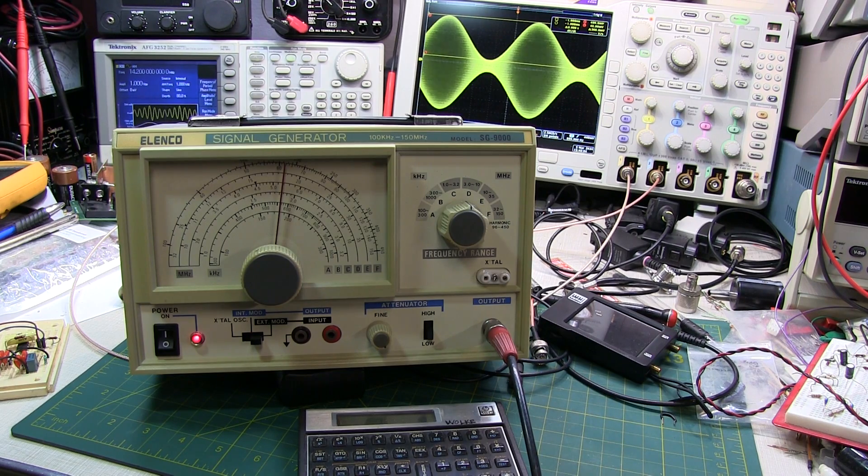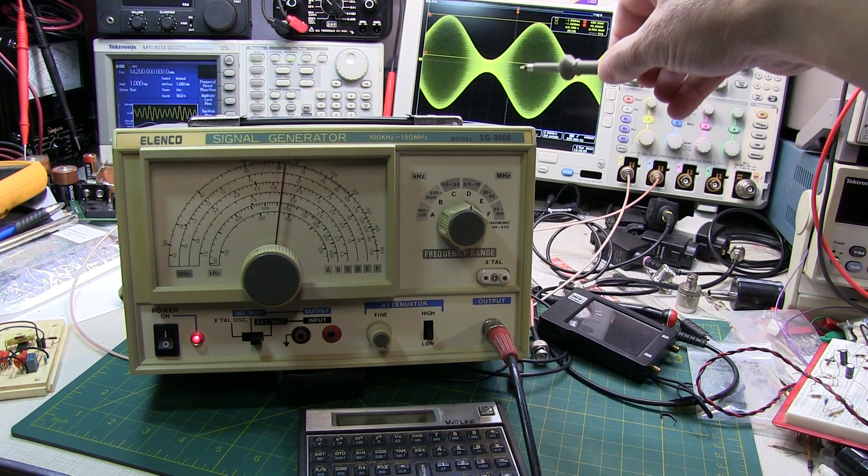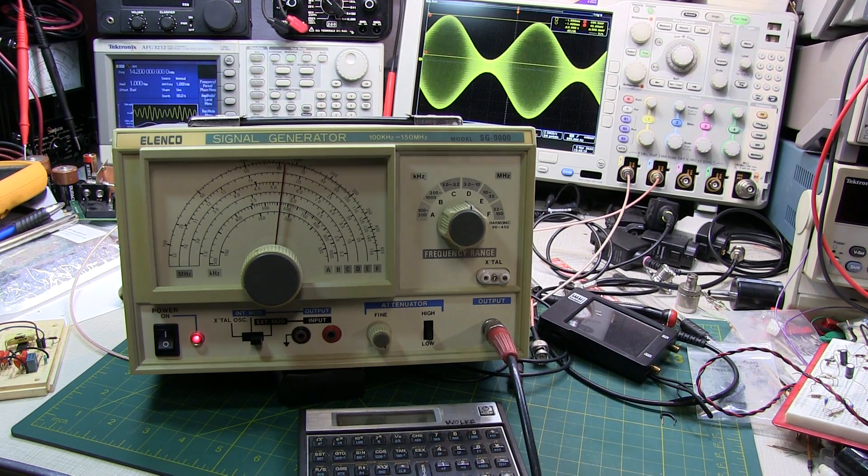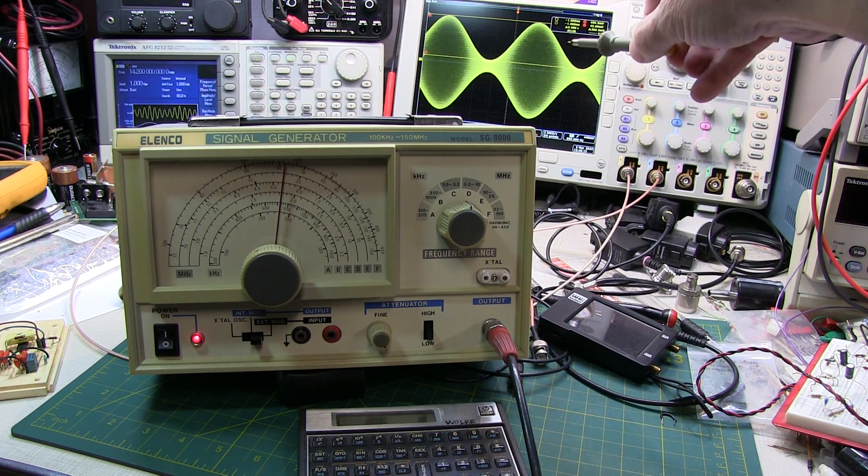In my previous video, we took a look at how to measure the AM modulation depth, either modulation index or modulation percentage for an AM or amplitude modulated signal using a digital oscilloscope.